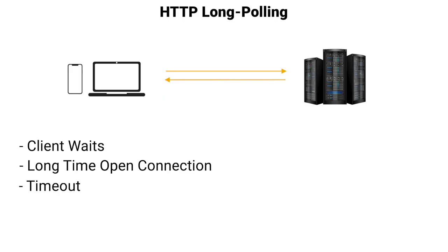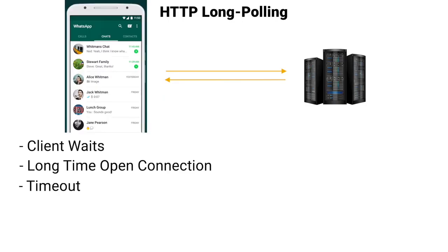If you consider our WhatsApp example again, HTTP long polling is a better solution than HTTP polling because messages can arrive in real time and there will be no empty responses, although we can still have timeouts and reconnections. But we can have an even better solution than this. That was all about HTTP long polling and how it differs from HTTP polling.